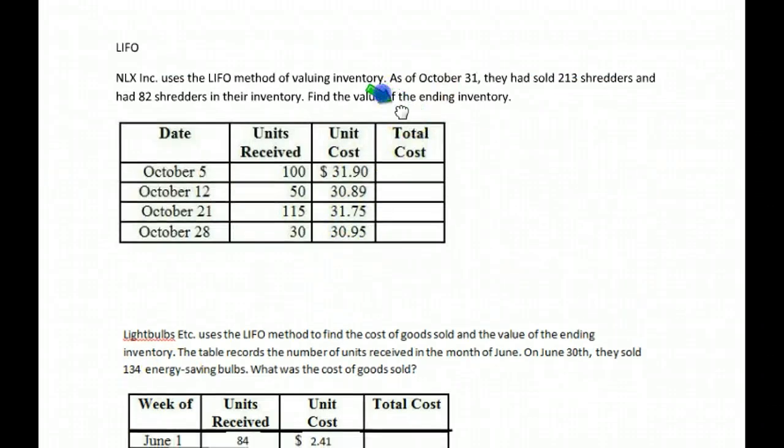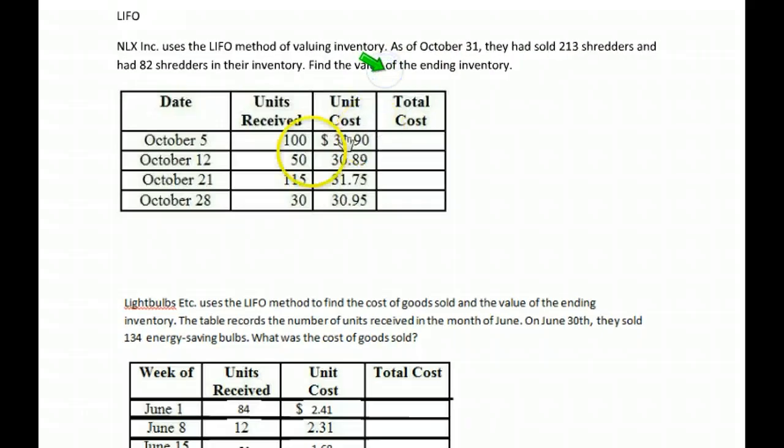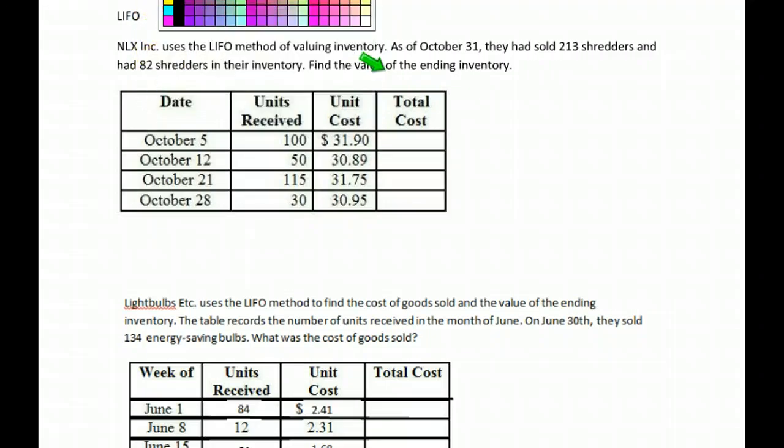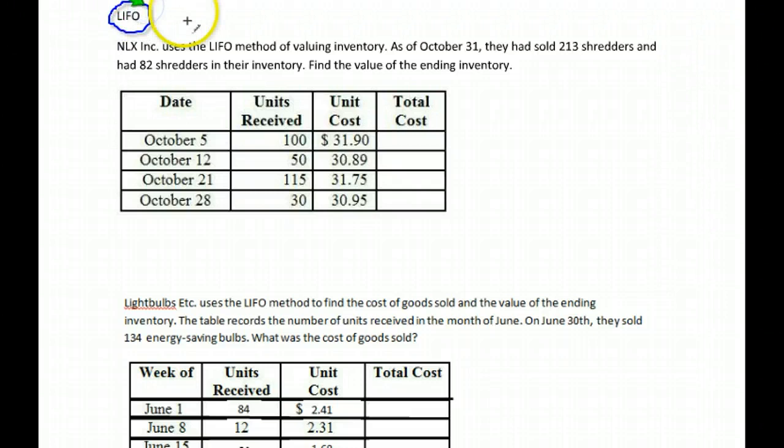Let's talk about our final method. This is the final method, the last method that we use. So we did Average Cost, we did FIFO, which is first in or first out. So let's take a look. This one is called LIFO. That stands for Last In, First Out.